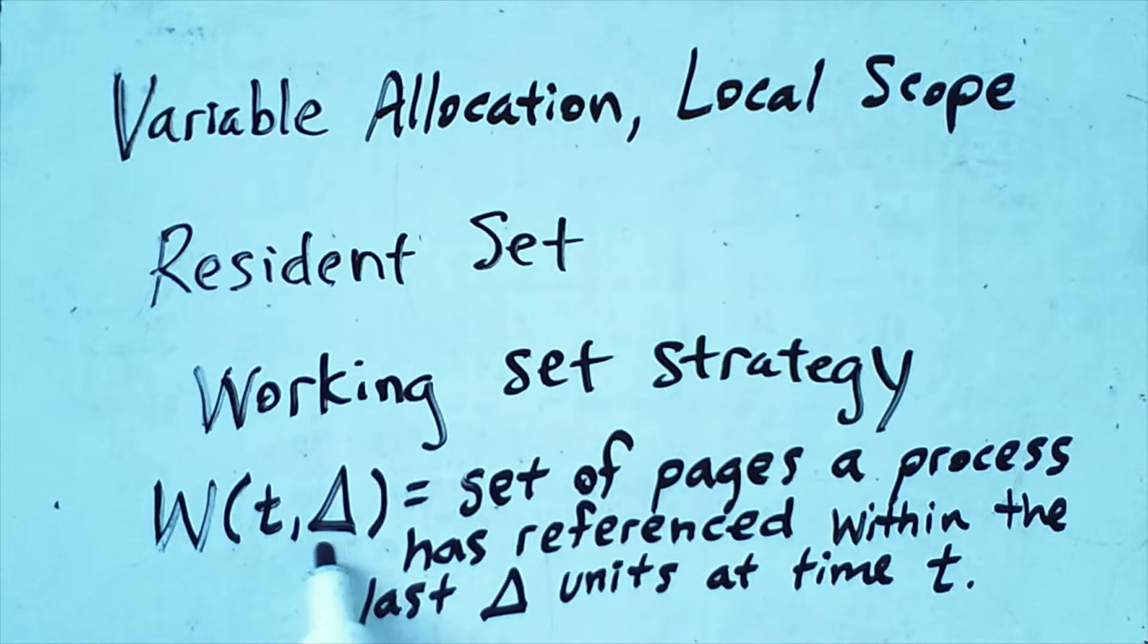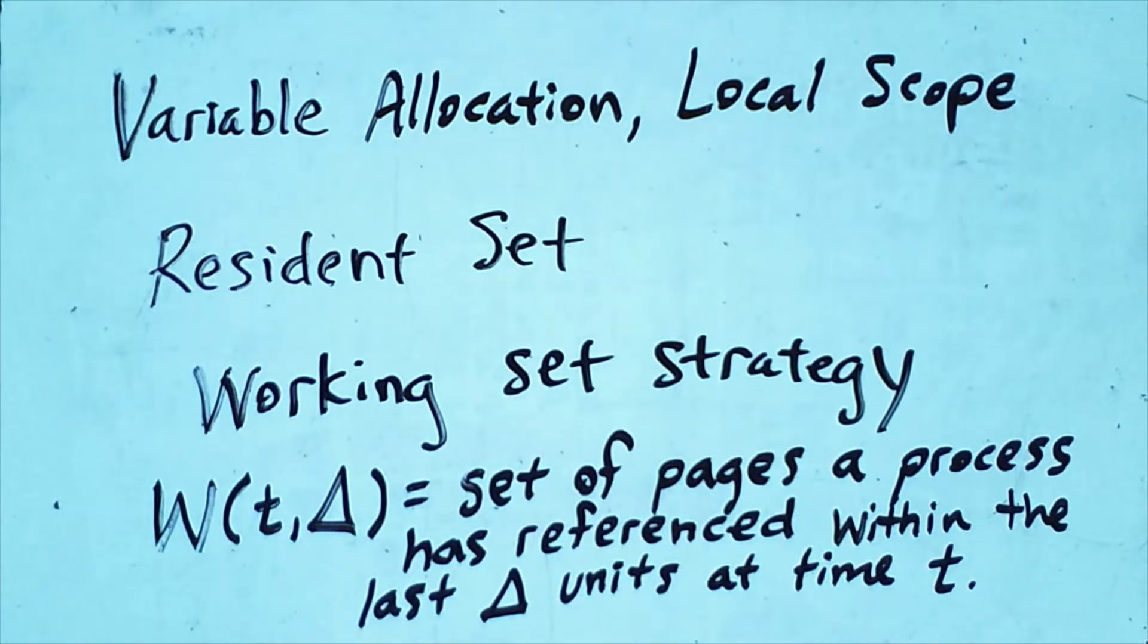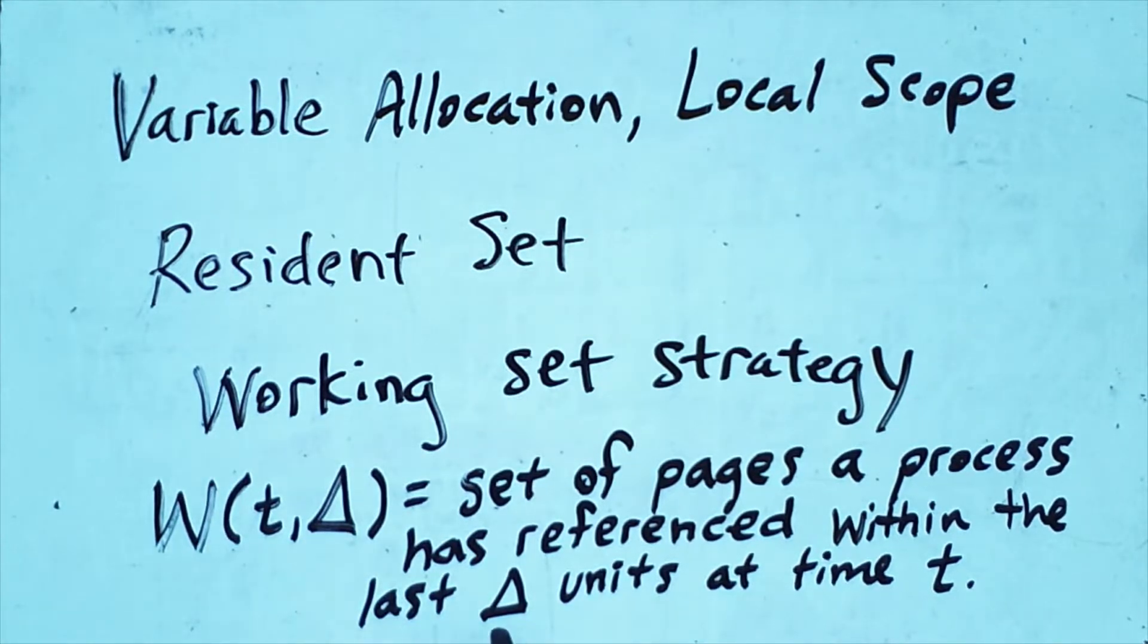In order to understand how this strategy works, we have to first define the concept of a working set. For a given process, the working set of that process at time t, for a given window size delta.